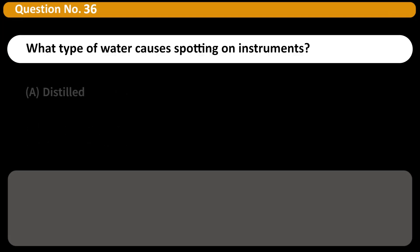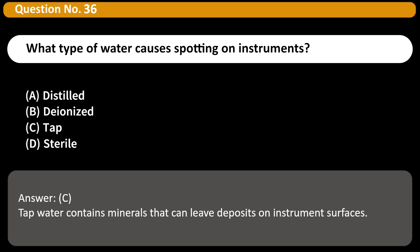What type of water causes spotting on instruments? A. Distilled, B. Deionized, C. Tap, D. Sterile. Answer C. Tap water contains minerals that can leave deposits on instrument surfaces.